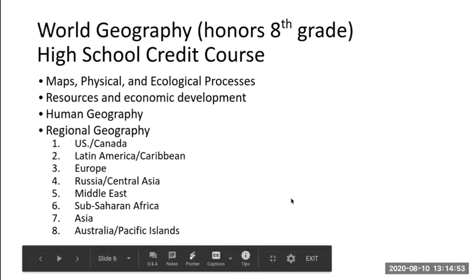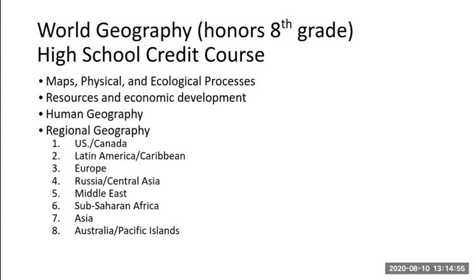World Geography is an honors 8th grade curriculum. It's for those students who took civics in 7th grade, and it is a high school credit class. While geography covers content relating to physical features such as mountains and rivers, we also look at maps and ecological processes. This information is used as a foundation to examine resources and economic development.